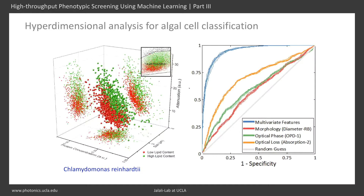ROC curves on the right show binary classification of normal and lipid-rich algae species. The blue curve shows classifier performance using all 16 biophysical features extracted from TSQPI. The red, gray, and orange curves show classifier performance using only single biophysical features in the categories of morphology, optical phase, and optical loss, respectively.